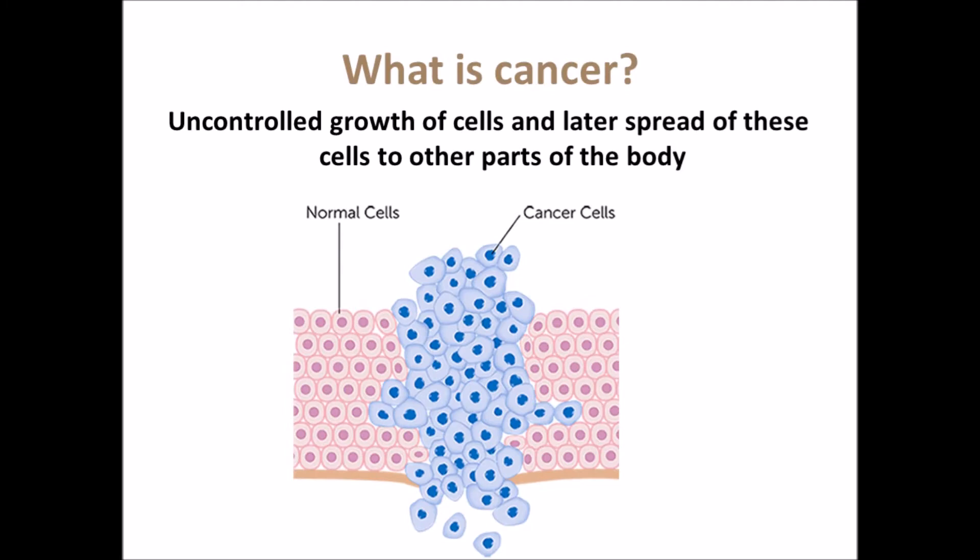Cancer is uncontrolled growth of the cells. Here pink cells are the normal cells and blue cells are the cancer cells. These blue cells go on multiplying multiple times and after some time get separated from that part and spread to other parts of the body.